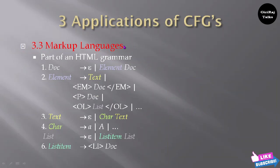The part of an HTML grammar in markup languages — see the first one. Document: Doc tends to epsilon, or element Doc. Next, element tends to text, or em Doc /em (closed in the em tag), or paragraph tag Doc, or order list — it was considered as list here.